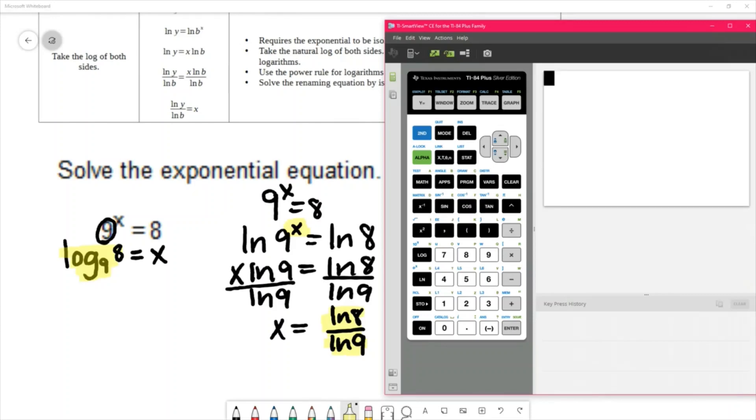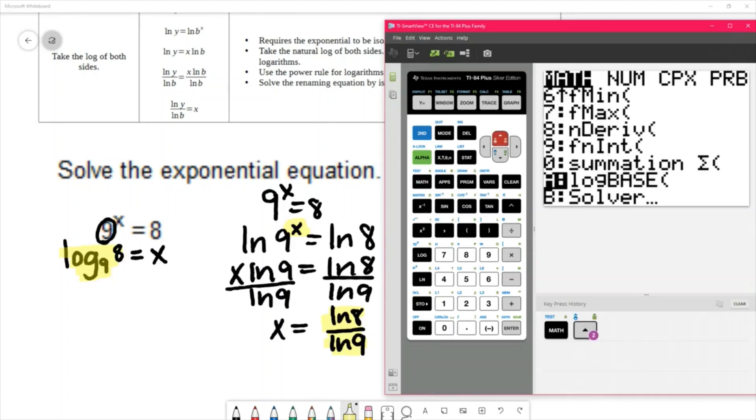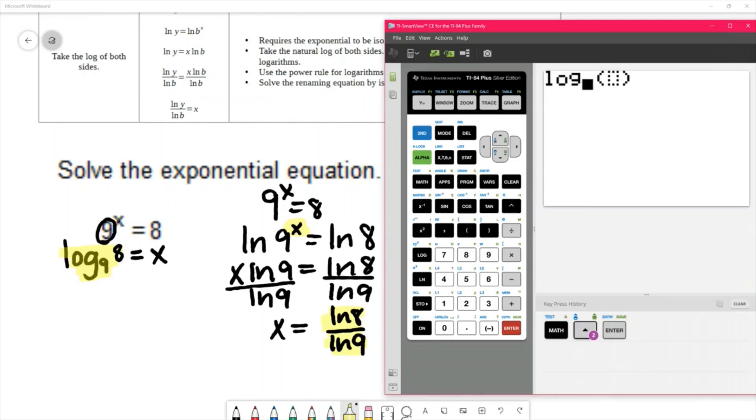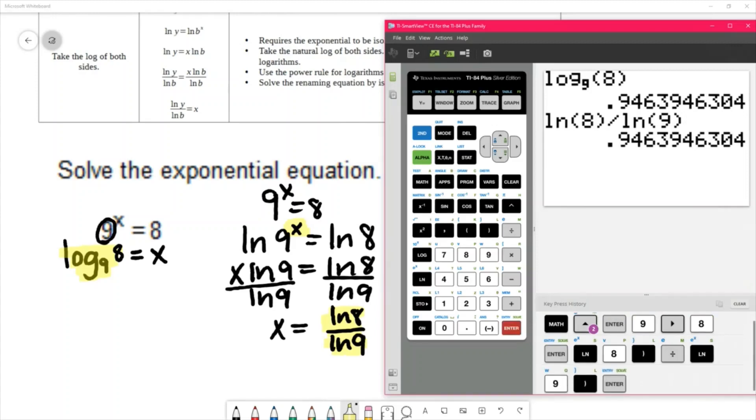So the answer on the left has log base 9, so I'll have to use the feature in the math menu. Base 9, log base 9 of 8, and that gets us 0.946. The solution on the right is natural log of 8 divided by natural log of 9, and we also get 0.946. So these, although look like different answers, they are equivalent.